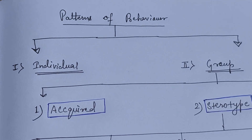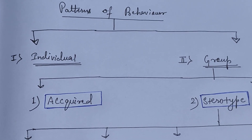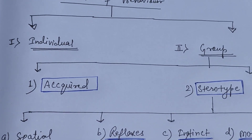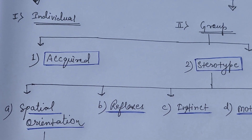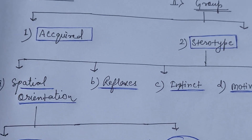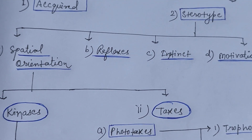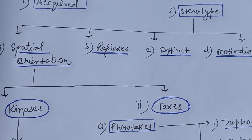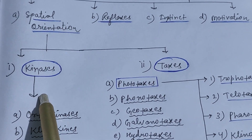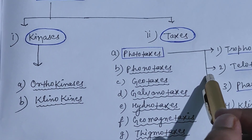Today we'll discuss the patterns of behavior. Here is the flowchart of patterns of behavior. It is divided into two parts: individual and group. Group is subdivided into acquired and stereotype. Stereotype is again subdivided into four parts: special orientation, reflexes, instinct, and motivation. Special orientation is subdivided into two parts: kinases and taxis.